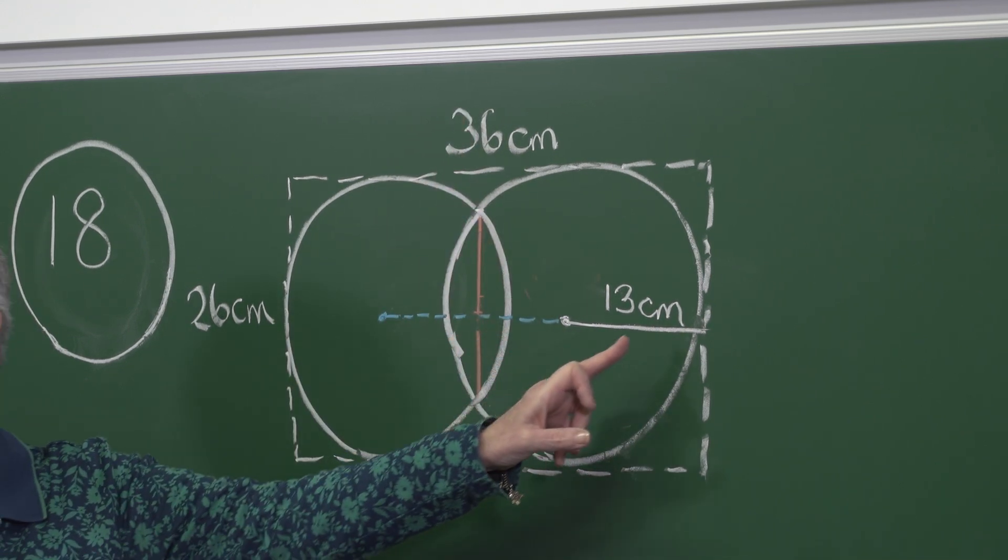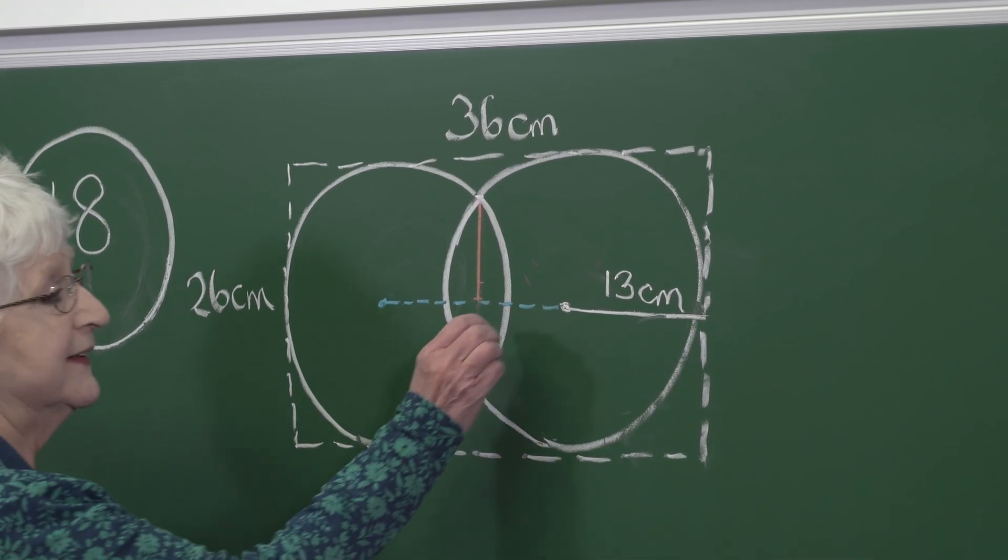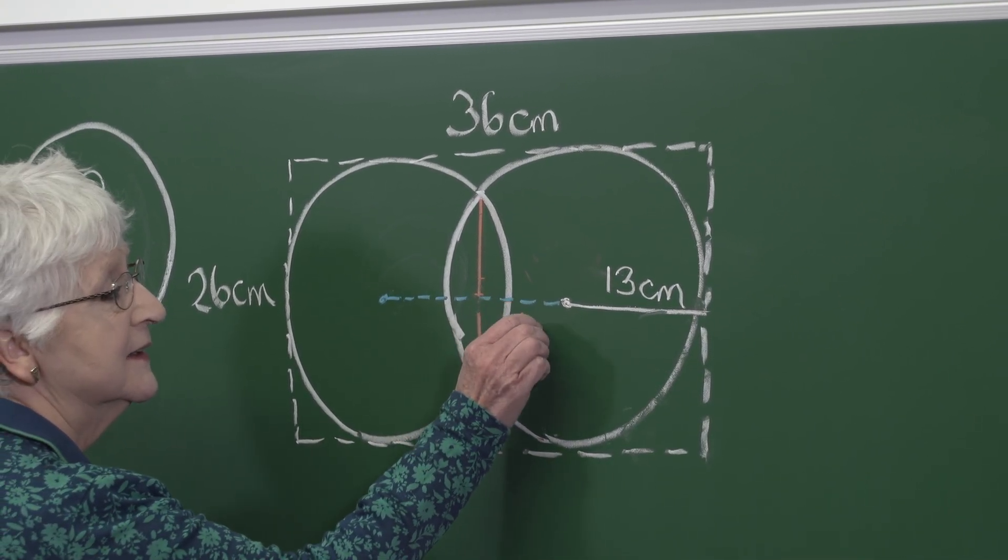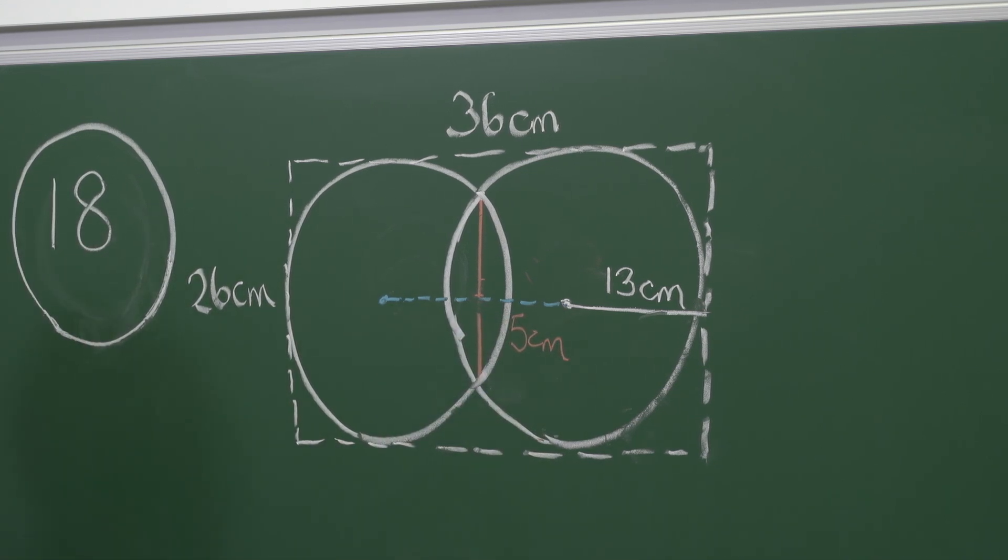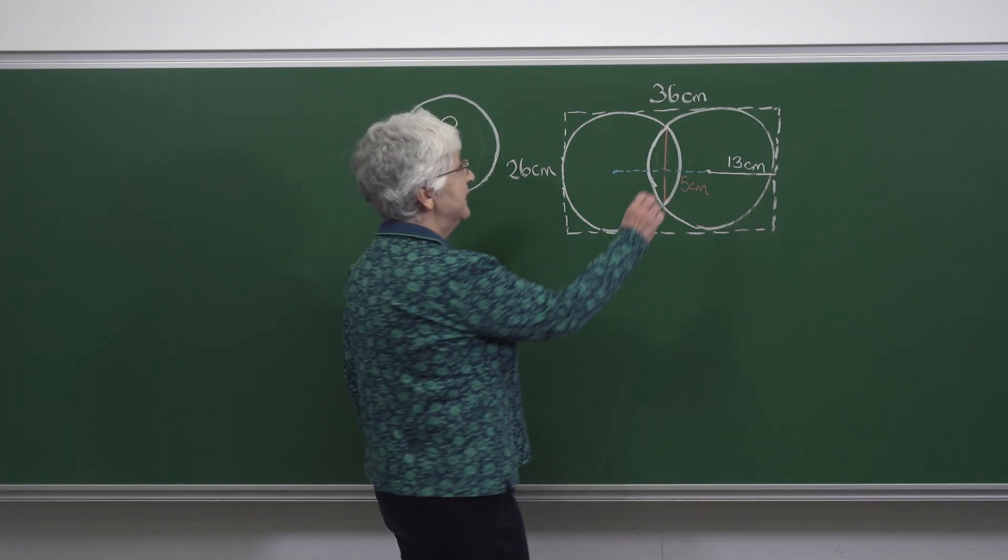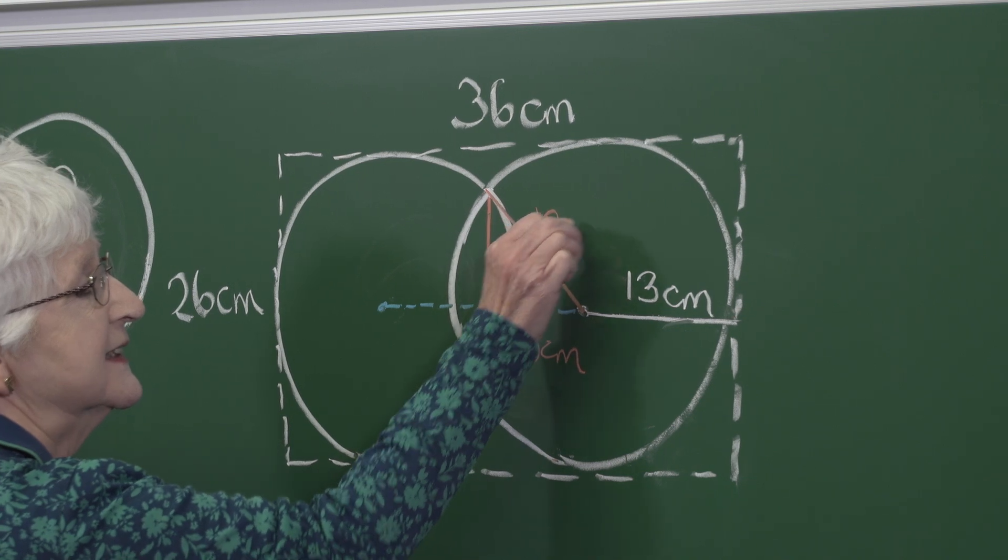Now this radius is 13 centimeters and that means that this small part of the blue line has length 5 centimeters. However, here we have another radius of length 13 centimeters.